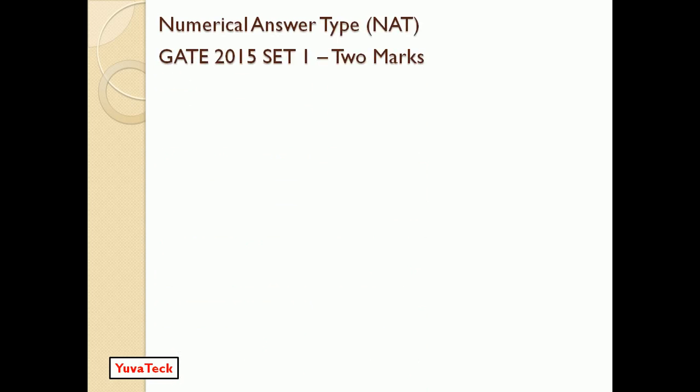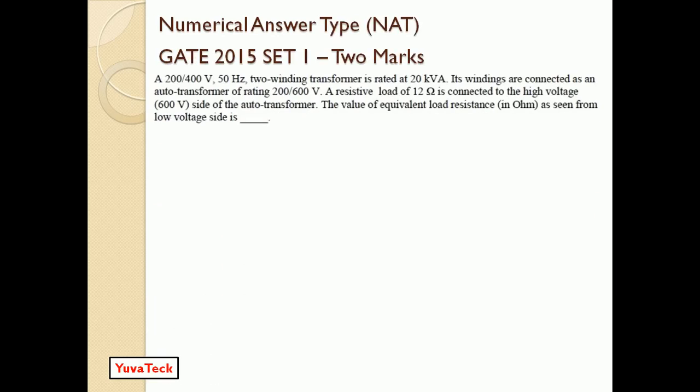It is a numerical answer type question, a two-mark question which has been asked in the 2015 Set 1 question paper. They have given that a 200/450 Hz two-winding transformer rated at 20 kVA. Its windings are connected as an auto transformer of rating 200/600 volt. A resistive load of 12 ohms is connected to the high voltage side of the auto transformer and we have to find out the value of equivalent load resistance from the low voltage side.